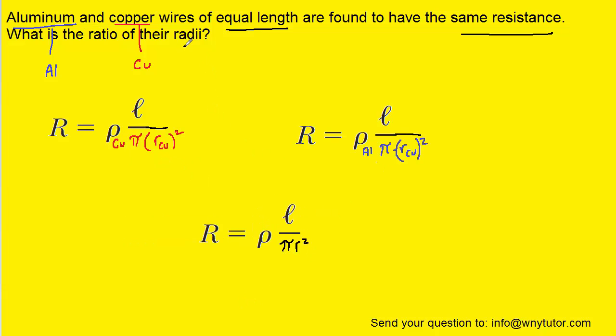Now since the question is asking about the radii, it's going to be useful to solve the resistance formula for the radius. To do that, perhaps the first thing we would do is multiply both sides by pi r squared.